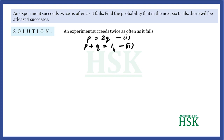This is a very important step: if an experiment ends with either success or failure, then the probability of success plus the probability of failure equals one, because there are only two outcomes. The sum of probabilities of all outcomes in an experiment is always equal to one.